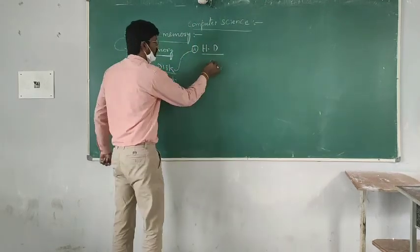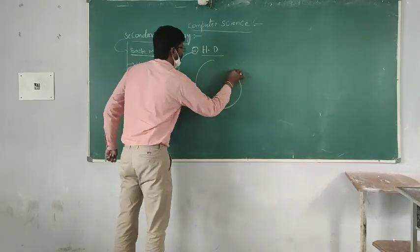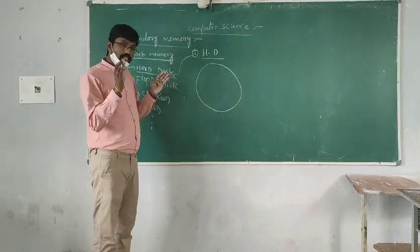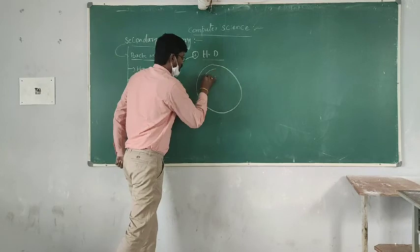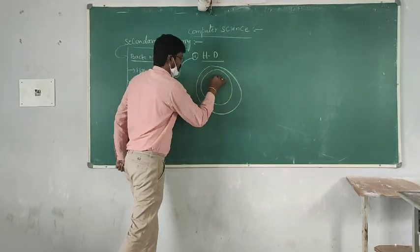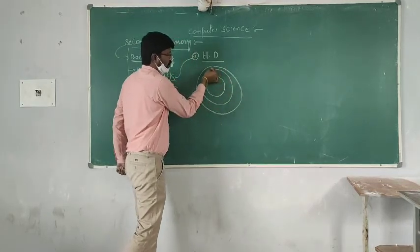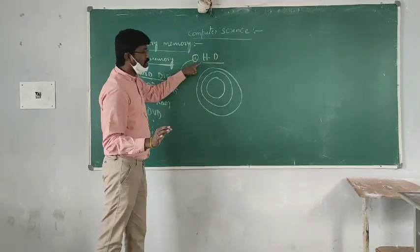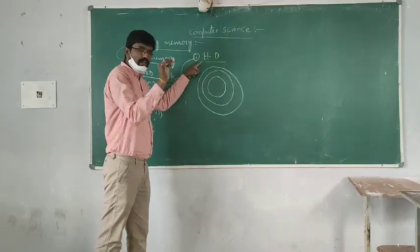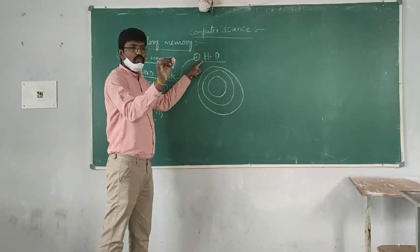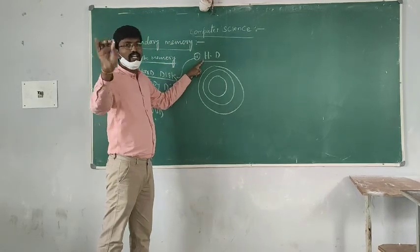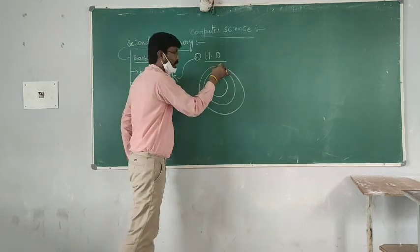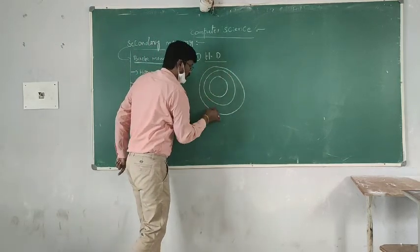Hard disk is made up of a number of surfaces. Each surface is divided into a number of tracks. These are track 1, track 2, and track 3.